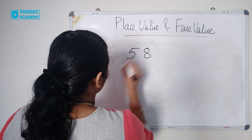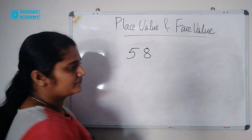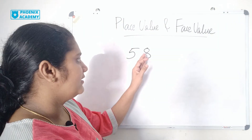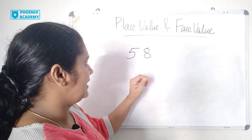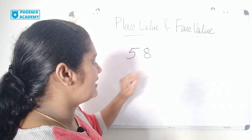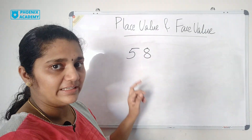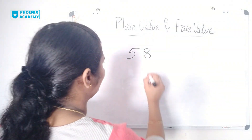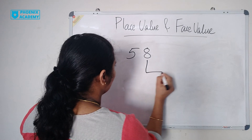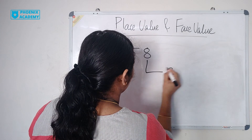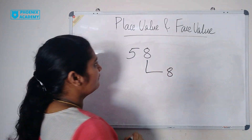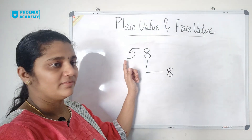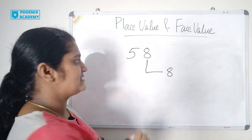58. Face value of 8 is 8 itself. What is the face value of 5? 5 itself.